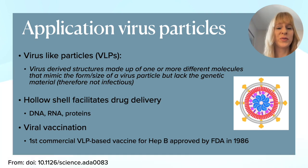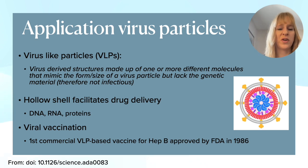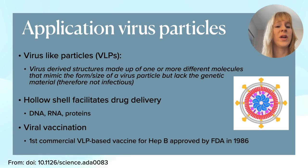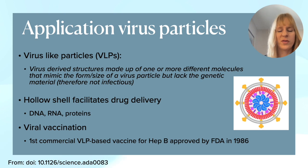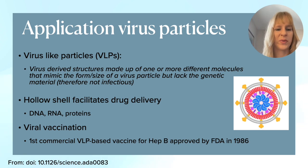The first VLP-based vaccination, for hepatitis B, was approved by the FDA already in 1986, and there have been many other vaccines since. There is increased interest in how we can use virus-like particles, but one of the main bottlenecks in terms of application has actually not been the production but the downstream processing, which is what I will discuss next.